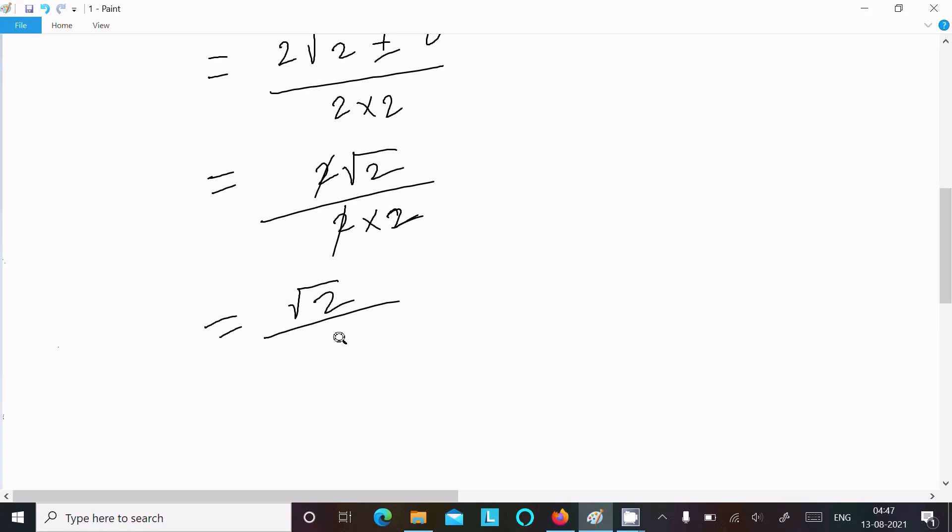√2 equal to 2, we can write √2 × √2, √2, √2 cancel, so here 1 by √2 its left.